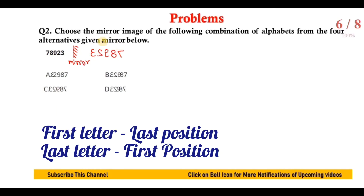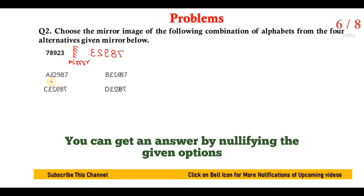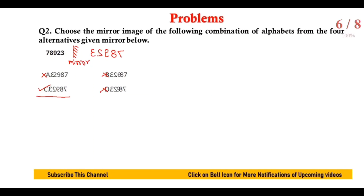So 7 8 9 2 3 will appear in the mirror in this way. Among the options: the first option shows 7 written as it is, which is wrong. The second option follows lateral inversion for order but does not give the mirror image for 7, so it is wrong. Option C is correct — all images are given properly. Option D shows 9 incorrectly reflected, so it is the wrong answer. Option C is correct.